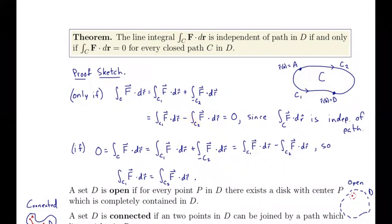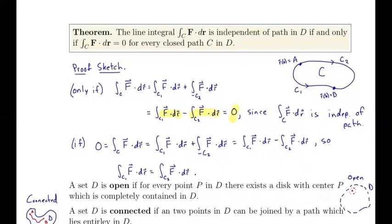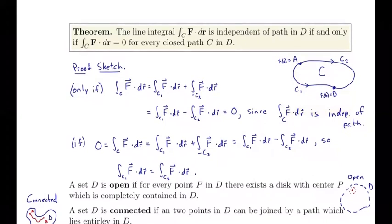Running c2 in reverse is the same as subtracting the line integral in the positive direction along c2. So we can rewrite the integral of F over the closed curve c as the difference of the integrals over c1 and c2. But since c1 and c2 have the same endpoints and the integral is path independent, those two integrals are equal, so their difference is zero. This proves the first direction: path independence implies the integral over any closed curve is zero.